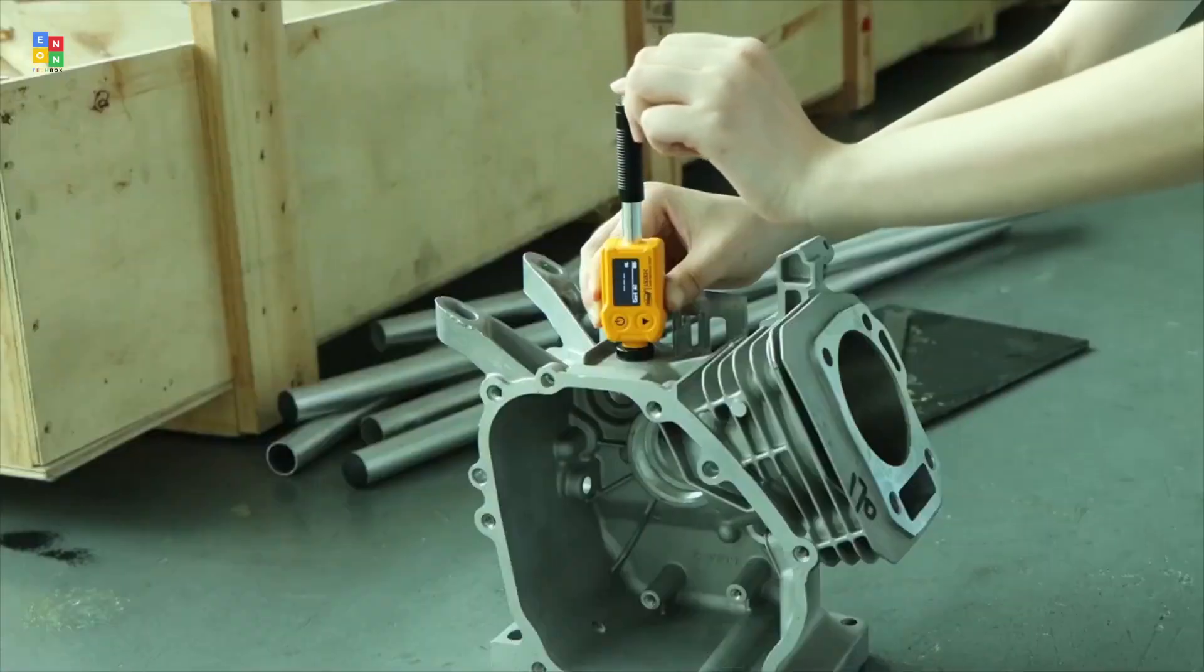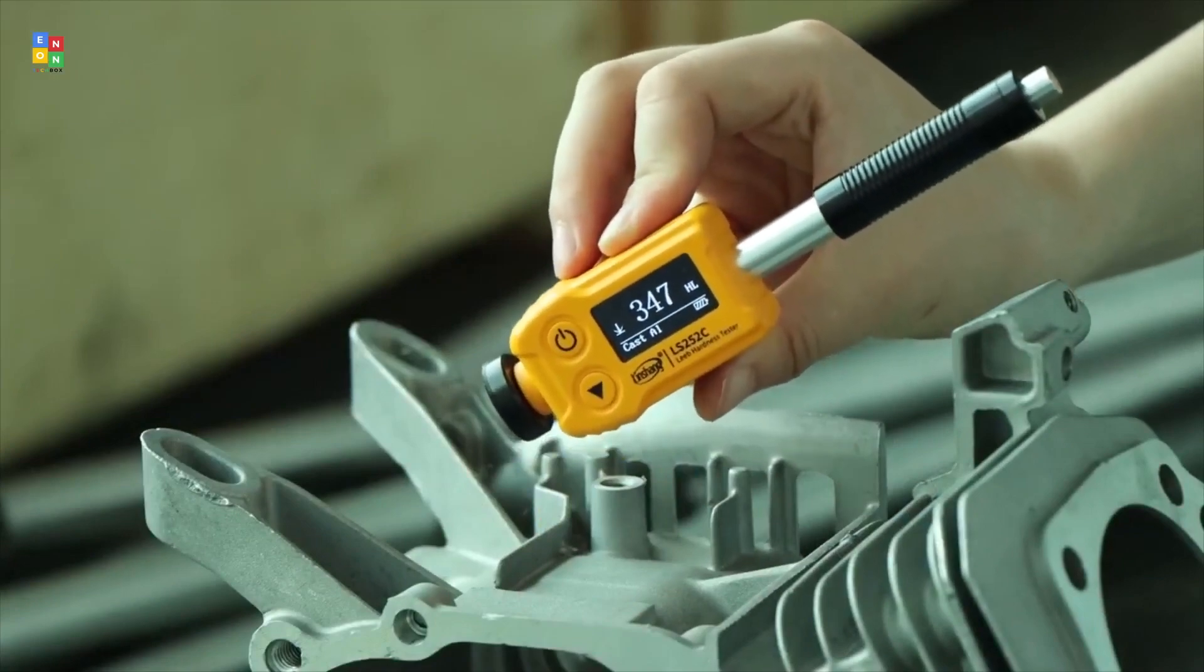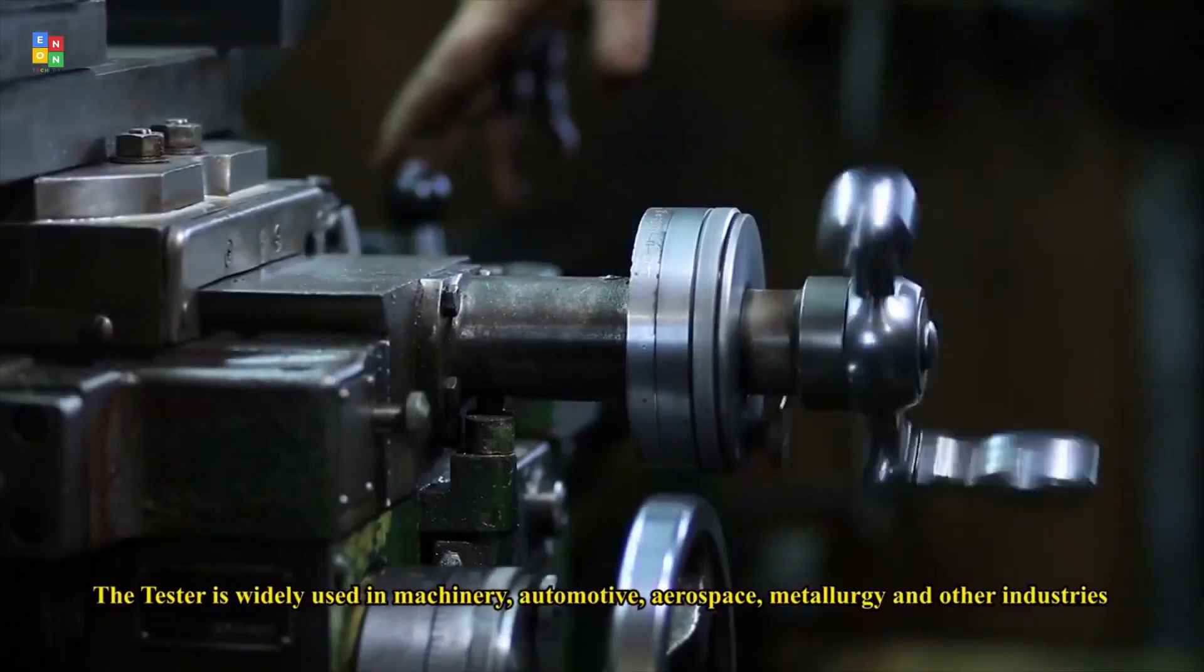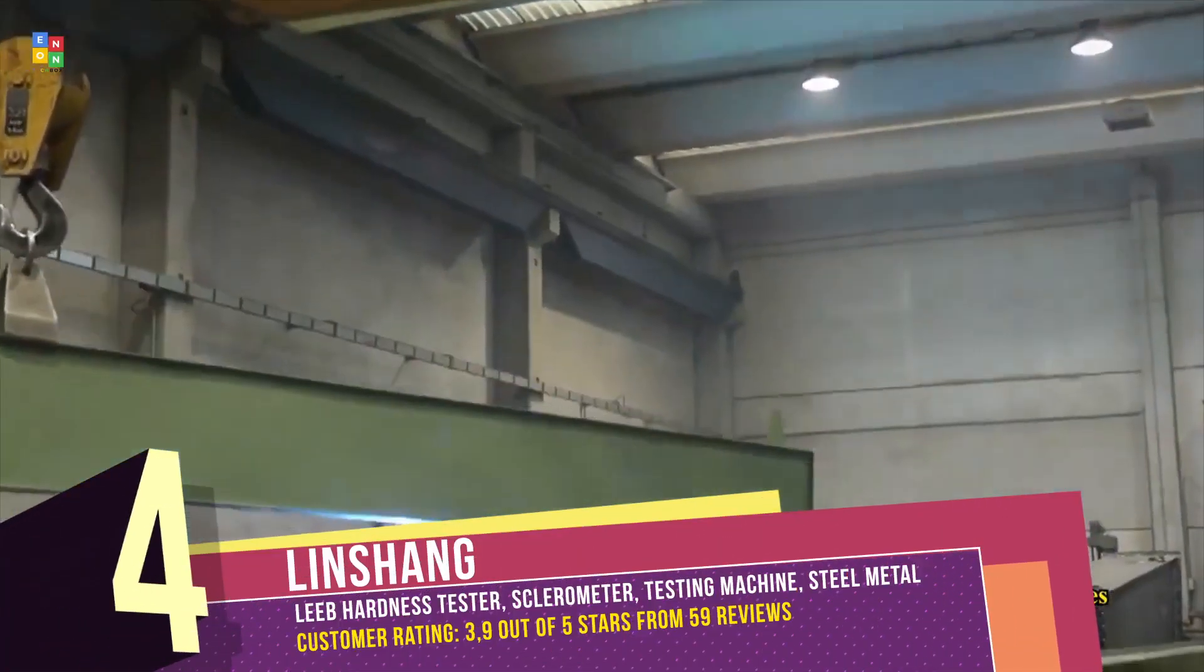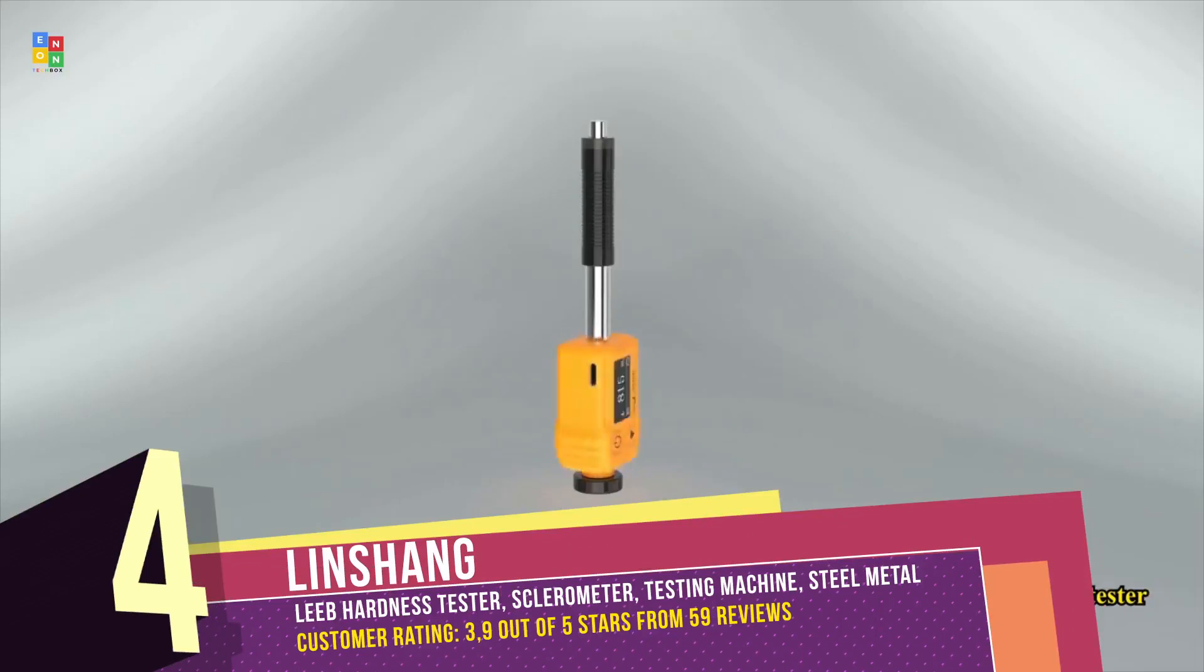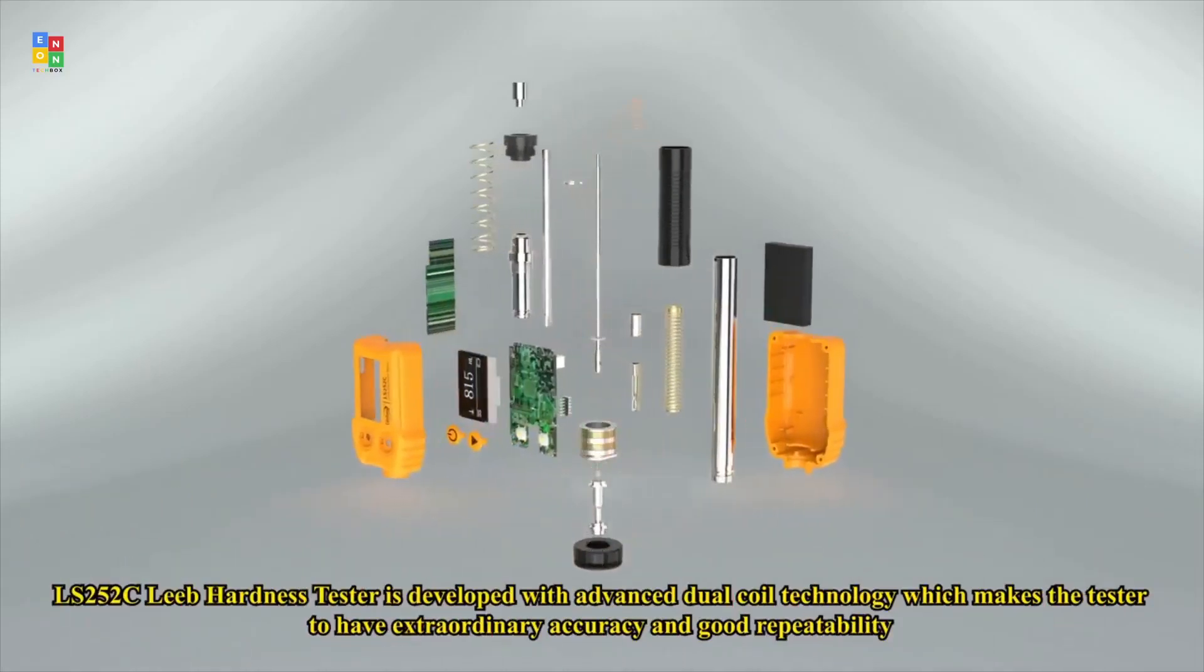Linshang LS252C Portable Lieb Hardness Tester, featuring a C-type impact device for precise surface hardness testing. With advanced dual-coil technology, it ensures exceptional repeatability and high accuracy up to 6HL, equipped with a direction sensor for automatic error compensation, and supports multiple hardness scales.